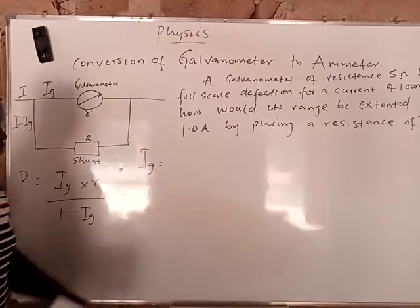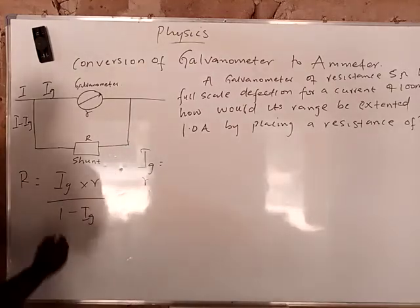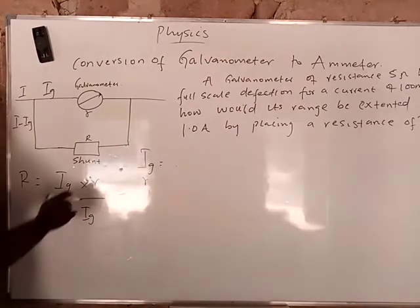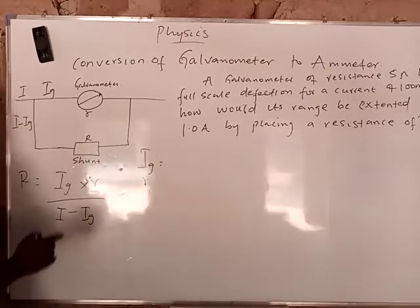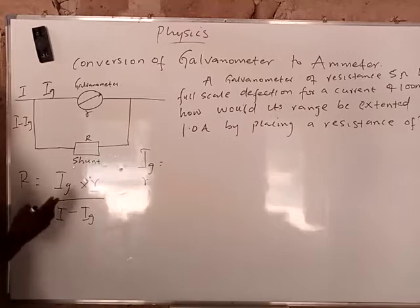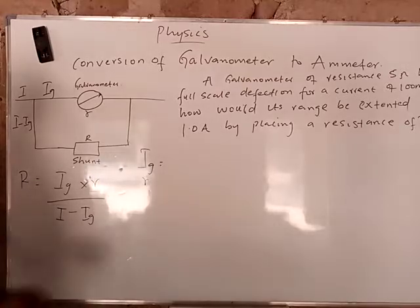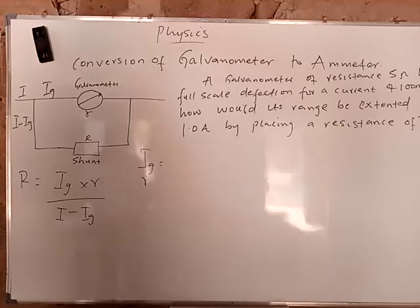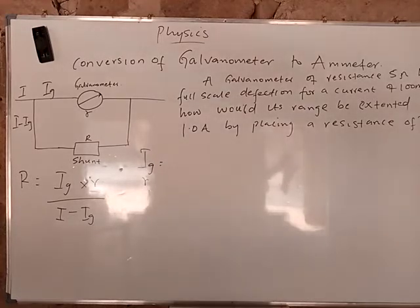This IG is the current of the galvanometer. Small r is the resistance of the galvanometer. And I is the ammeter current. Remember, we are converting galvanometer to ammeter, so this I is the ammeter current and IG is the galvanometer current. R is the shunt resistance. This is the formula we are going to use to calculate the conversion of galvanometer to ammeter.